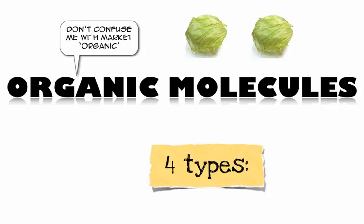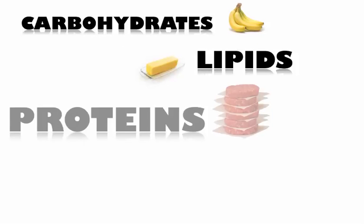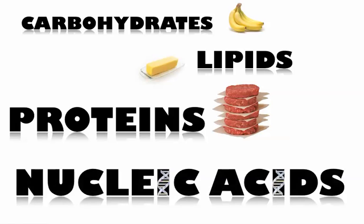We talked about what the word organic meant. Organic in the supermarket means food with no pesticides, grown naturally, no added chemicals. Organic in science means it has carbon, or anything that comes from a living thing — like feathers or wood. There are four types of organic matter: carbs, lipids, proteins, and nucleic acids.